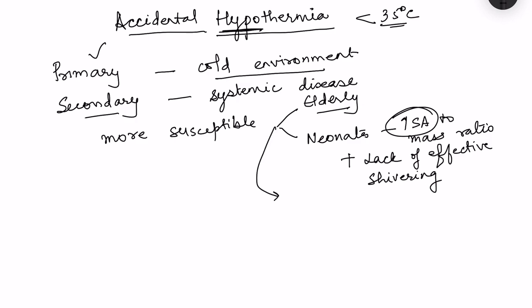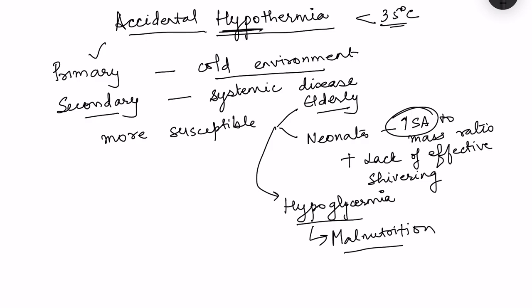Causes which lead to hypoglycemia also predispose to hypothermia, since shivering requires adequate nutrients to be metabolized. First, malnutrition causes a decrease in glycogen reserves, so the person cannot shiver for a long time. Also in malnutrition there is decreased subcutaneous tissue, which means there are higher chances of energy being transferred from the core to the surface — subcutaneous tissue normally prevents heat loss from the body.